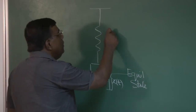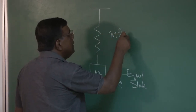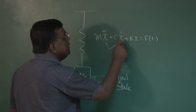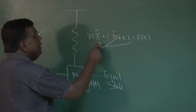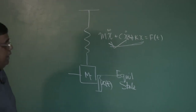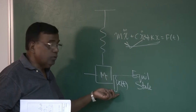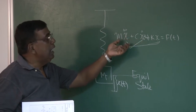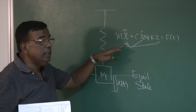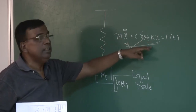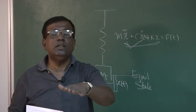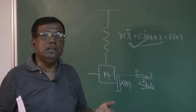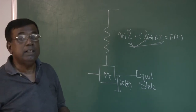If you recall, when we wrote the equation m x-double-dot plus c x-dot plus k x equal to f(t), x(t) was a perturbed variable — the displacement from the equilibrium. We wrote the equation of motion in terms of the perturbed quantity, found its roots, and studied whether it is oscillatory or returns to trim without oscillation — corresponding to underdamped, overdamped, or critically damped cases.